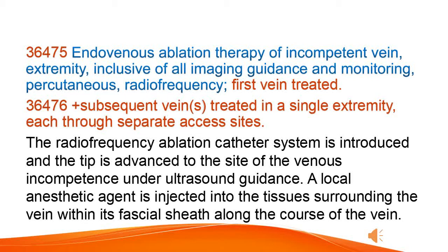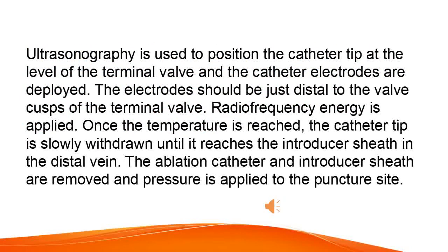A local anesthetic agent is injected into the tissues surrounding the vein within its fascial sheath along the course of the vein. Ultrasonography is used to position the catheter tip at the level of the terminal valve and the catheter electrodes are deployed. The electrodes should be just distal to the valve cusps of the terminal valve.